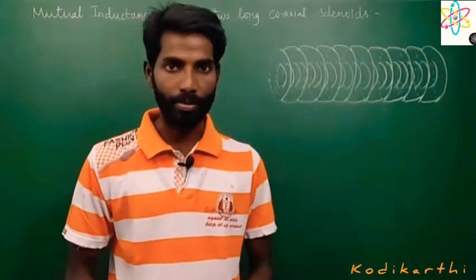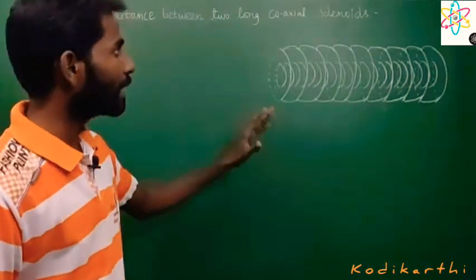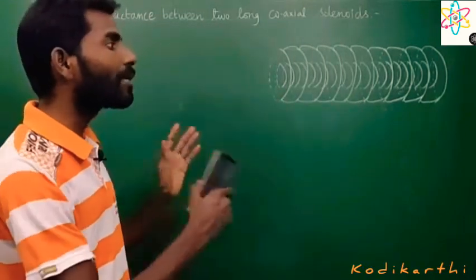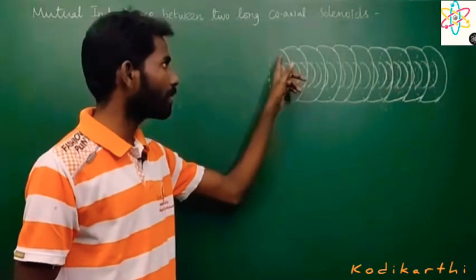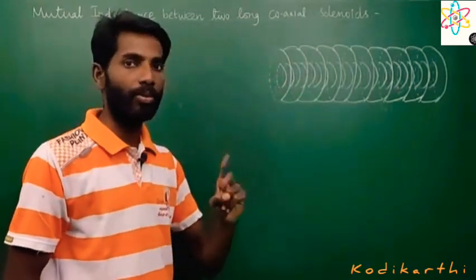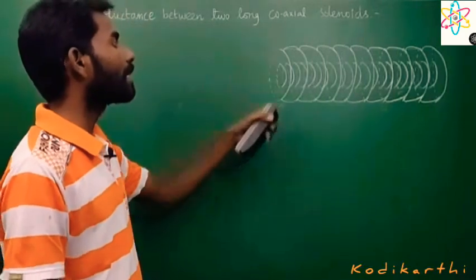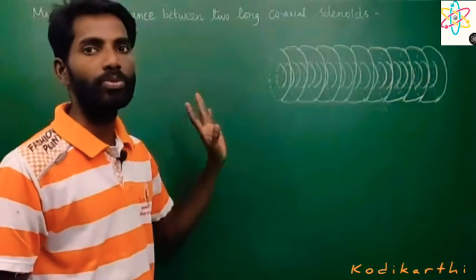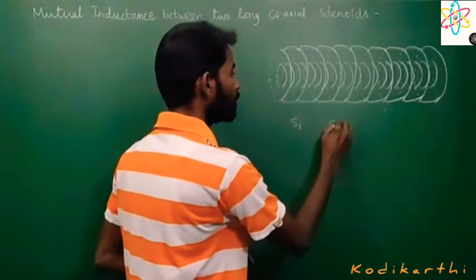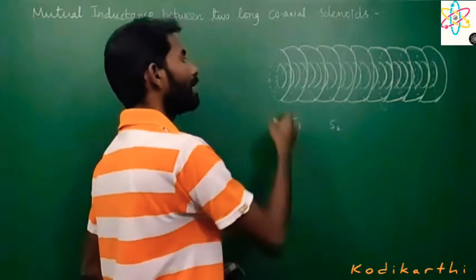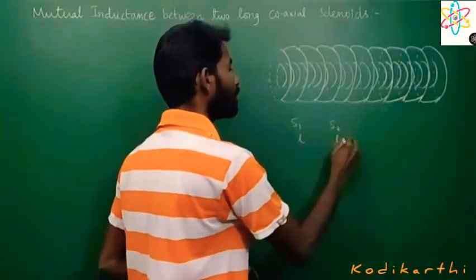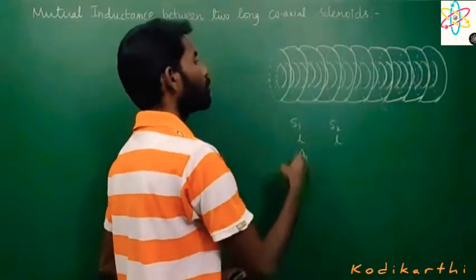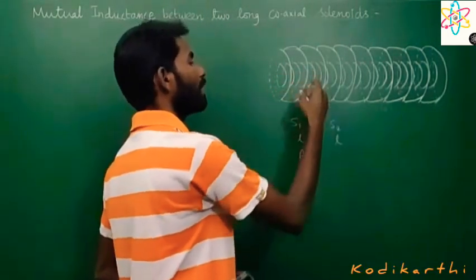Let's talk about mutual inductance between two coaxial solenoids. This coaxial solenoid is equal length. S1 and S2 are two solenoids. S1 solenoid has an area of cross section, and S2 solenoid has an area of cross section.